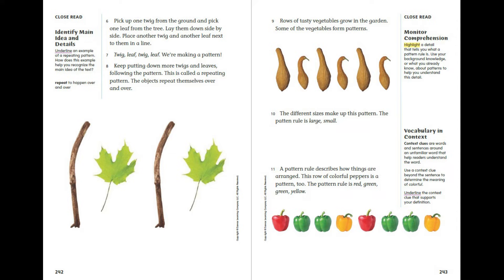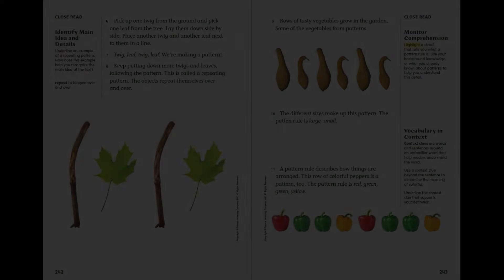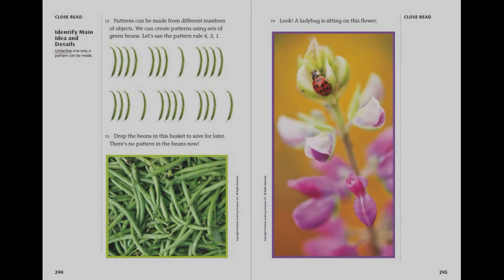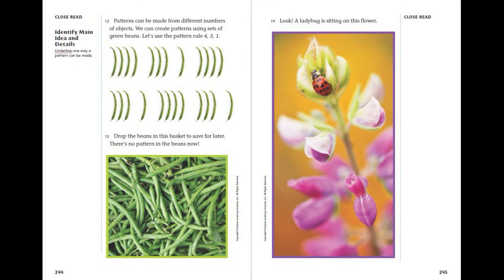The pattern rule for the peppers is red, green, green, yellow. Patterns can be made from different numbers of objects. We can create patterns using sets of green beans. Let's use the pattern rule four, three, one. Drop the beans in this basket to save for later. There's no pattern in the beans now.